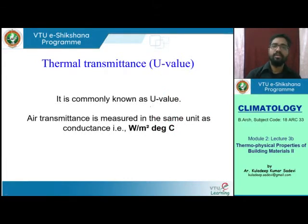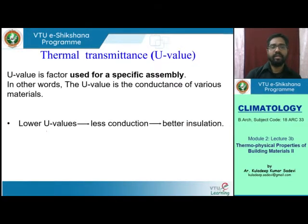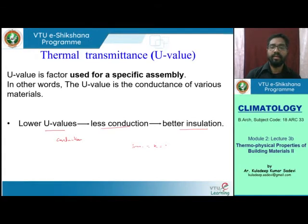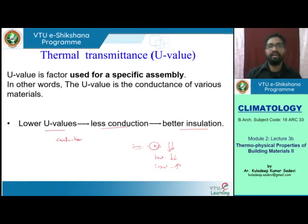The units of conductance and transmittance are the same because transmittance is conductance including surface conductance. If the U value is lower, conductance is lower, meaning less heat flow — which means better insulation. For insulating materials, the K value (conductivity) is very low, meaning heat flow is also very low, giving high insulation. Since conductance is proportionate to conductivity, lower U values offer good resistance. U value is most commonly used and is known as the overall coefficient of heat transfer.